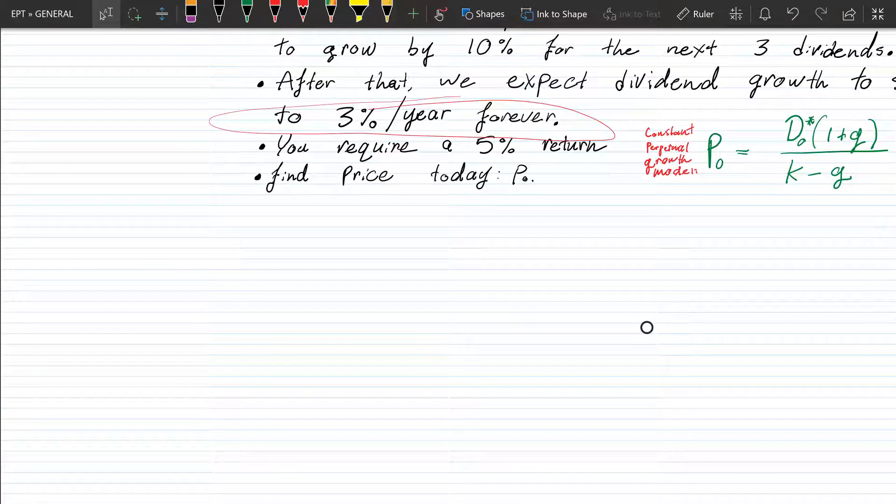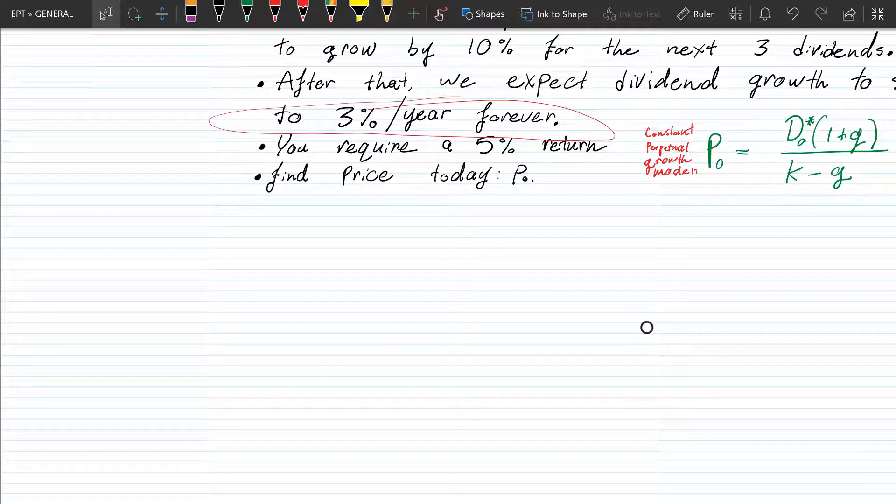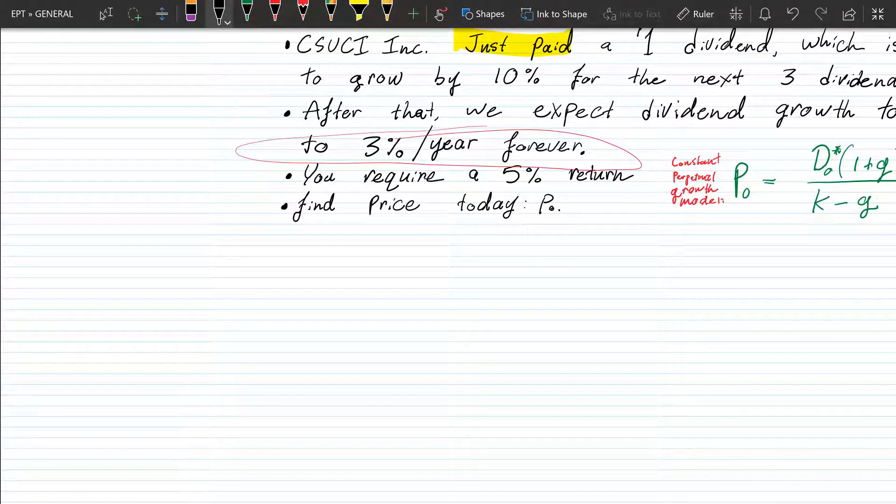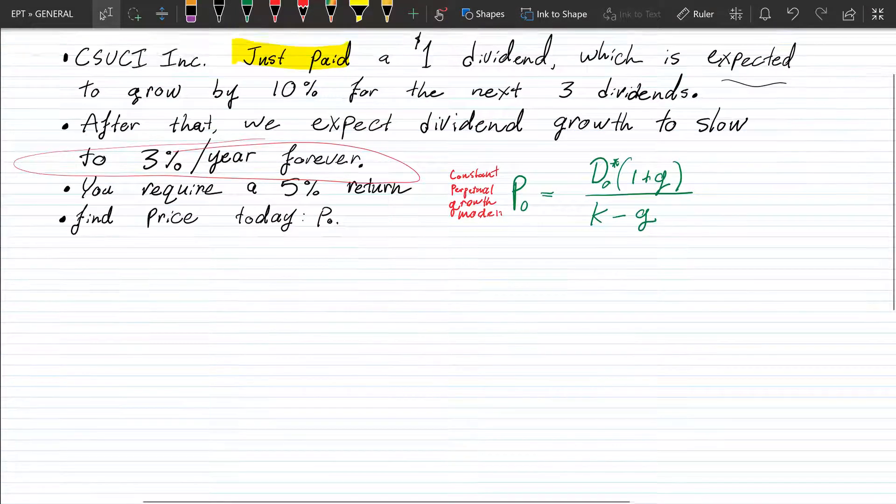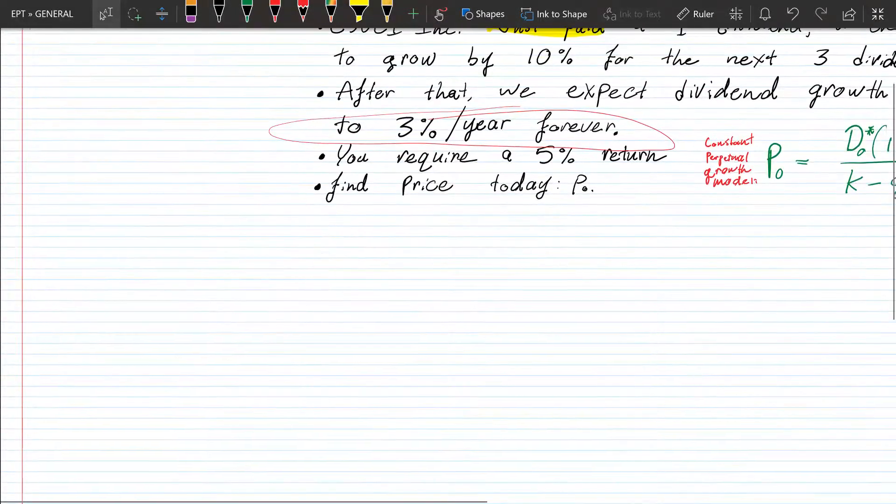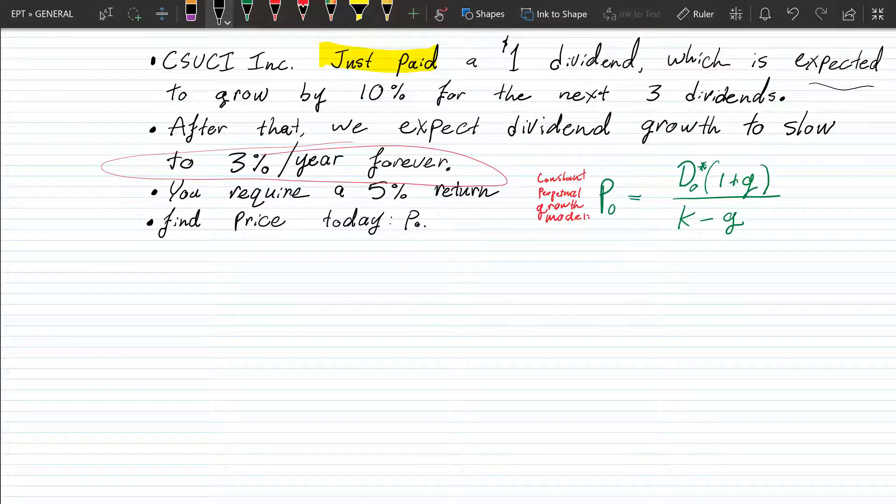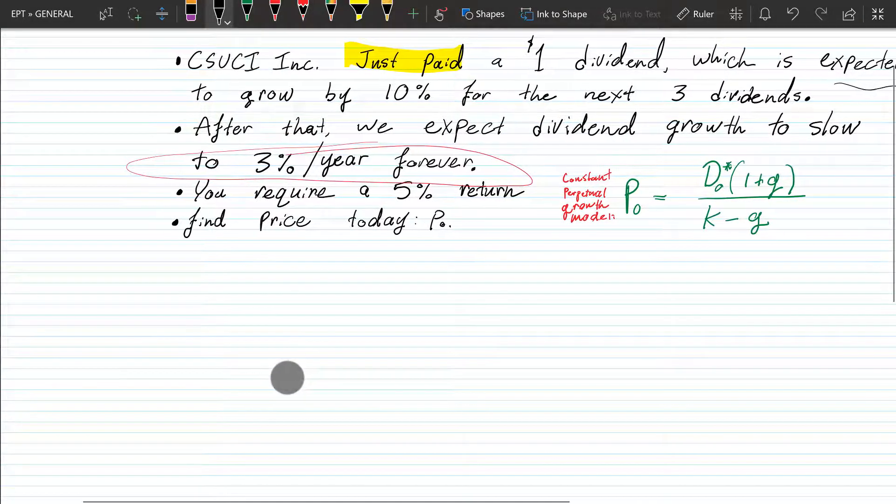Okay, so we know that any asset is evaluated based off of the present value of all future cash flows, right? And that holds true to the valuation of any asset there is. And that's including stocks because stocks do have cash flow and that is considered dividend payments. Now, dividend payments don't usually follow such a constant, steady thing like this. Usually they're just determined by the company. But in this case, it looks like we have a dividend schedule set up. So we'll be able to derive the price out of these dividends.